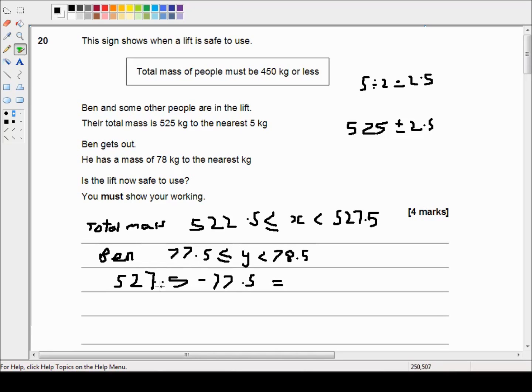So 527.5 minus 77.5. Well the 7.5's disappear. So this is 520 minus 70 which is... so 52 minus 7 is 50 minus 5 which is 45. So that's 450.